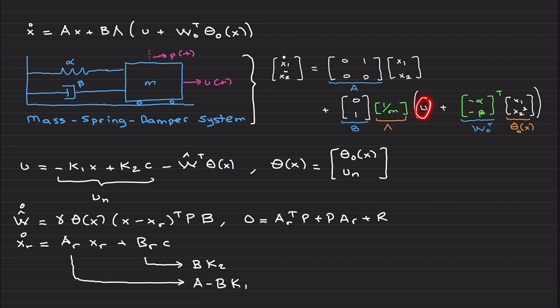In this case, since we assumed nothing is known, one over m pops up here as an uncertainty lambda, and the other uncertain terms are here. We are doing the structured uncertainty case, so these are known.